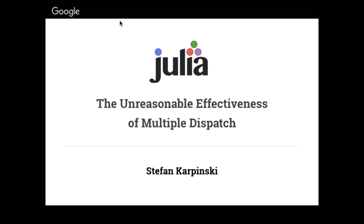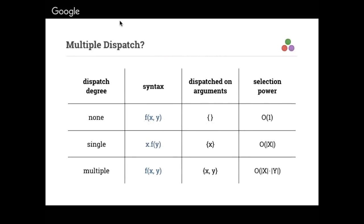The first question is: what is this multiple dispatch thing? This little table explains some things about it. The terminology is 'degree of dispatch' — that talks about how many different versions, when you see a function call, how many versions of that thing F could you possibly be calling?